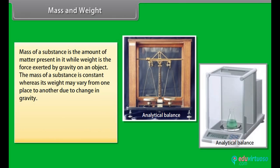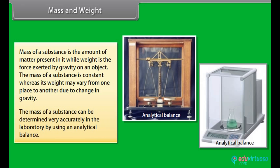Mass of a substance is the amount of matter present in it while weight is the force exerted by gravity on an object. The mass of a substance is constant, whereas its weight may vary from one place to another due to change in gravity. The mass of a substance can be determined very accurately in the laboratory by using an analytical balance.